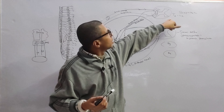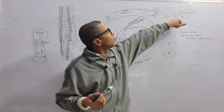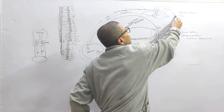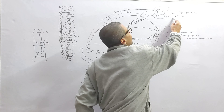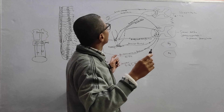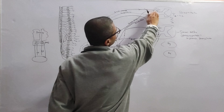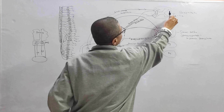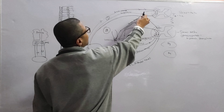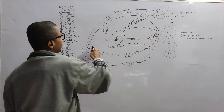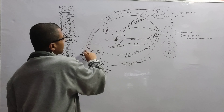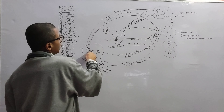The urinary bladder is composed of detrusor muscles. From the urinary bladder, sensory information goes to the spinal cord, and autonomic fibers — sympathetic and parasympathetic — come to the bladder. A somatic motor nerve, the pudendal nerve through root values S2, S3, S4, also comes to the external sphincter of both the bladder and anus.